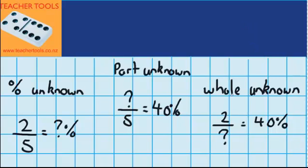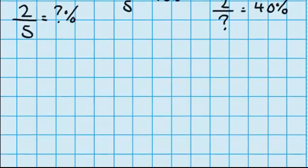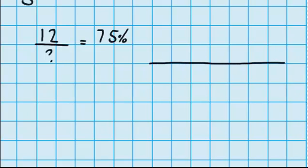Now let's look at the last type. It's whole unknown. So again using the same type of question. You sit a test. You get 12 questions right out of some amount. And that means that you get 75% of the test correct. Well, let's put that on a number line again. We know that 12 questions correct is worth 75%. So we're trying to work out what 100% would be, or all the questions in the test.